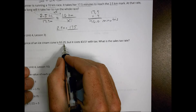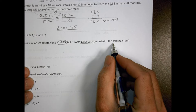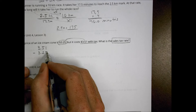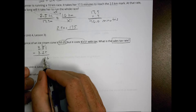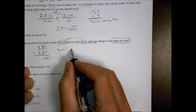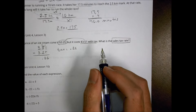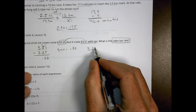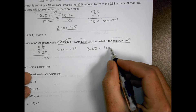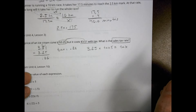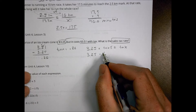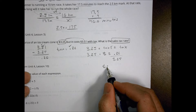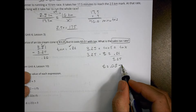The price of an ice cream cone is three dollars twenty-five cents, but it costs three dollars fifty-one with tax. What is the sales tax rate? Find the tax amount: three fifty-one minus three twenty-five equals twenty-six cents in tax. Set up the equation: three point two five times the tax rate equals point twenty-six. Divide both sides by three point two five to get point zero eight, which equals eight percent.